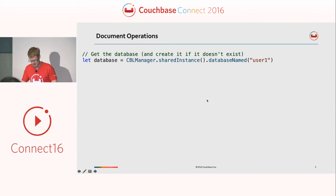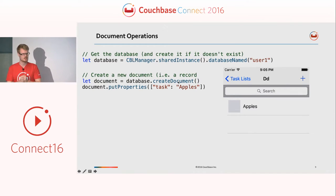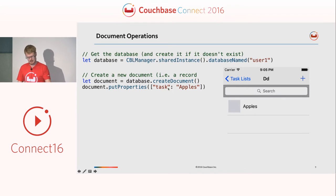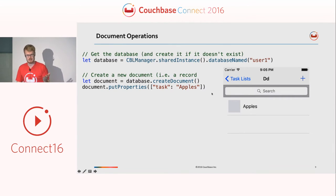To put a document into the database, you call `database.createDocument`. Now you have a document and you can put properties into it. For example, we'll put a task property with value 'Apples'. You can set up the UI to grab this document out and display it. This is just for visualization alongside the code.